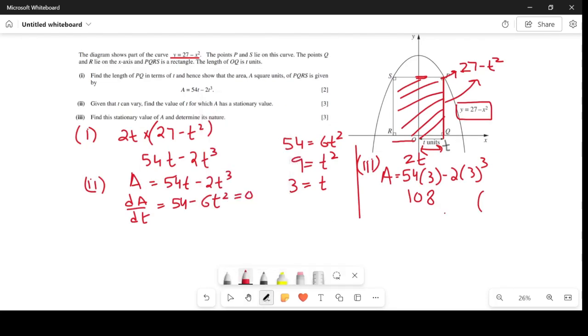The stationary point is 3 comma 108. Now we have to determine whether it's a maximum point or minimum point.